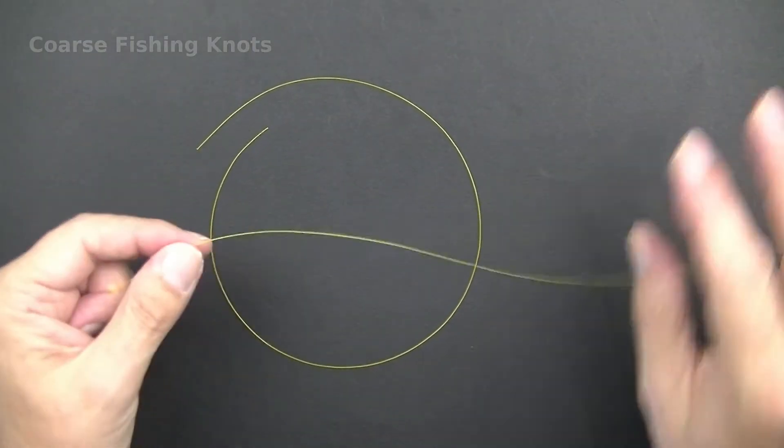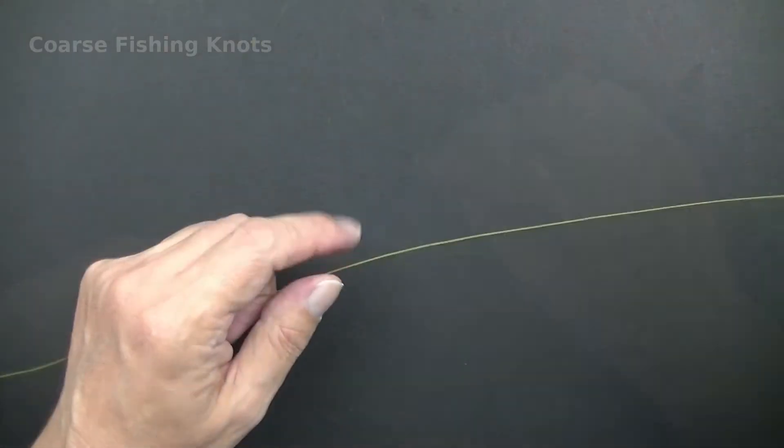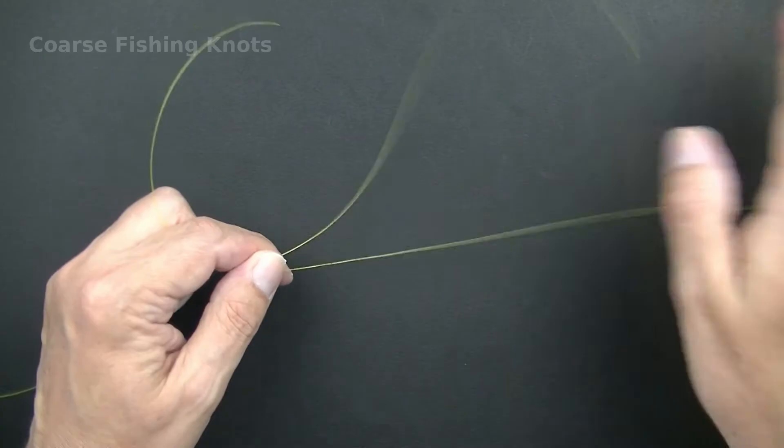How to tie a sliding stop knot. Cut a length of main line from the reel. Lay the off cut parallel to the main line.